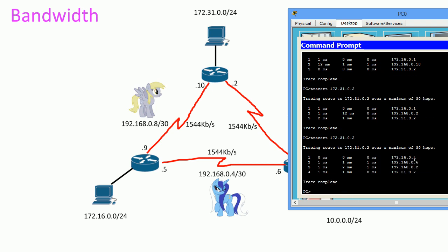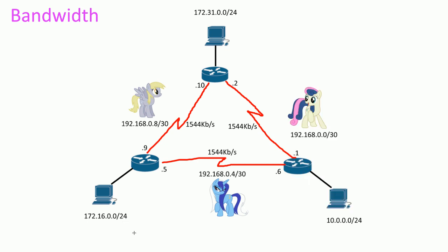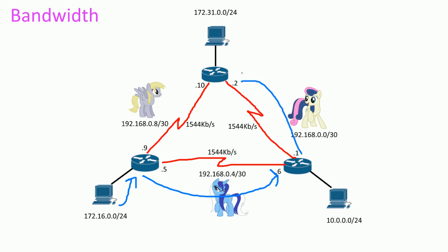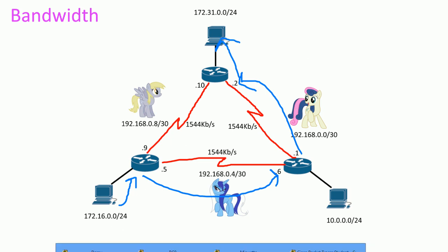We go to the PC again and run a traceroute. Our first hop is the gateway, the next hop is the next router dot-six, then dot-two, and finally our destination PC at 172. The path is: gateway, then dot-six, that router sends it to dot-two, and it finally reaches the destination.